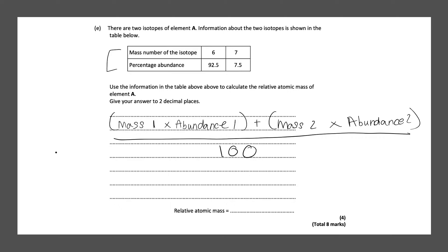Make sure you have a calculator next to you. The mass of the first one is six, so in brackets we put six times 92.5, close brackets, then we add open brackets seven multiplied by 7.5, close brackets. Press equals and divide the answer by a hundred, and that should give us 6.075.